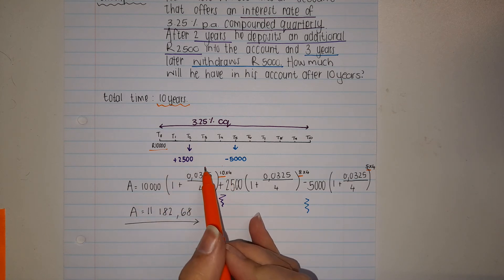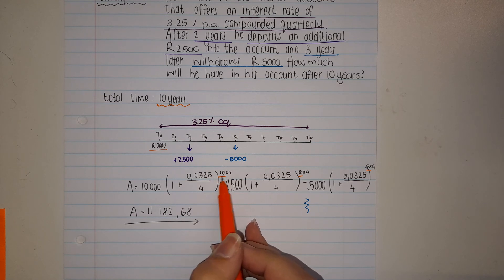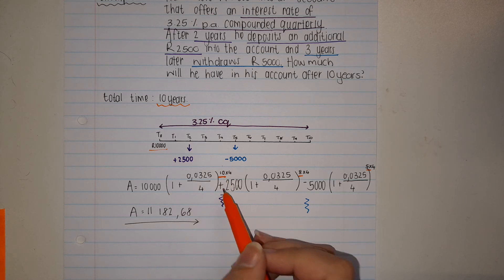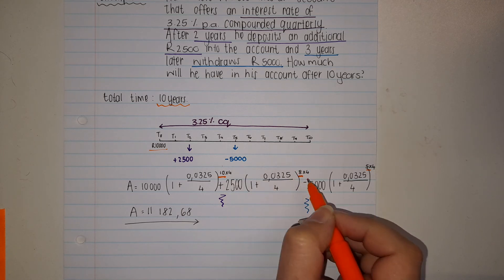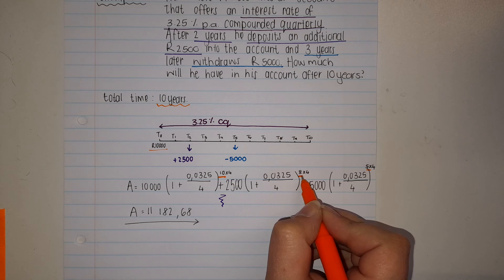I started with my initial 10,000. My interest rate does not change for 10 years, and you put the total amount of years. Then after 2 years he added 2500, so now we have 8 years left.